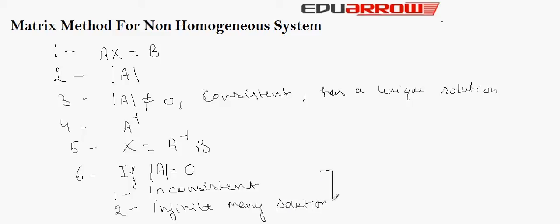To check this condition, compute adjoint of A times B. If adj(A)B ≠ 0, then the given system of equations is inconsistent and has no solution.